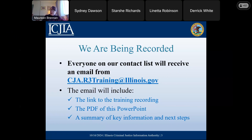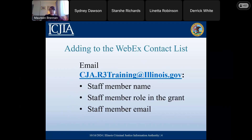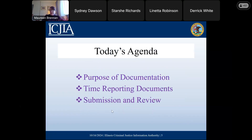If you have other staff at your organization that you'd like to receive invitations to the rest of the trainings and to receive those follow-up emails directly, please use this email address, cja.r3training at illinois.gov, and we'll add you to the list. Please send us the staff member name, their role in the grant, as well as their email address.